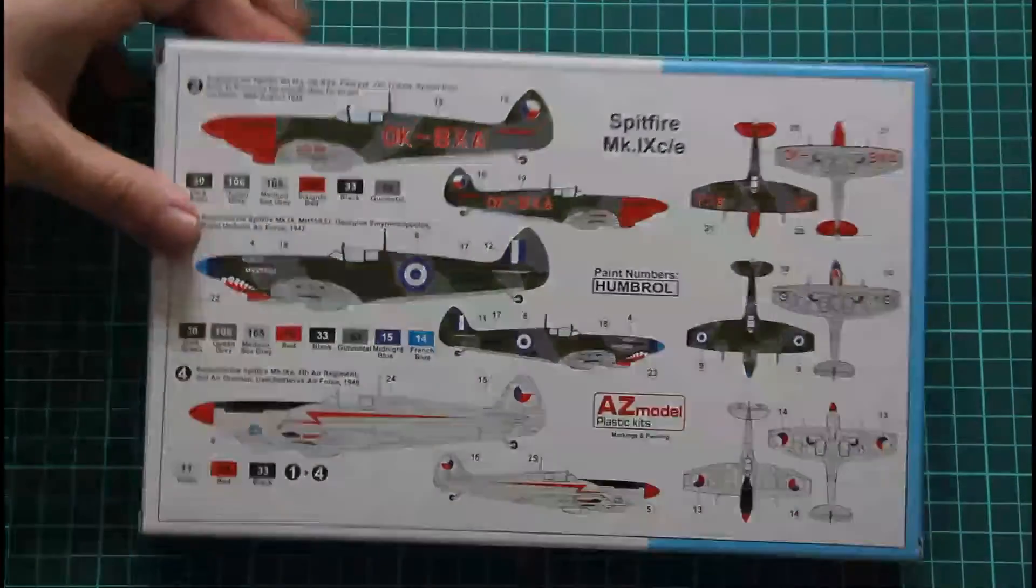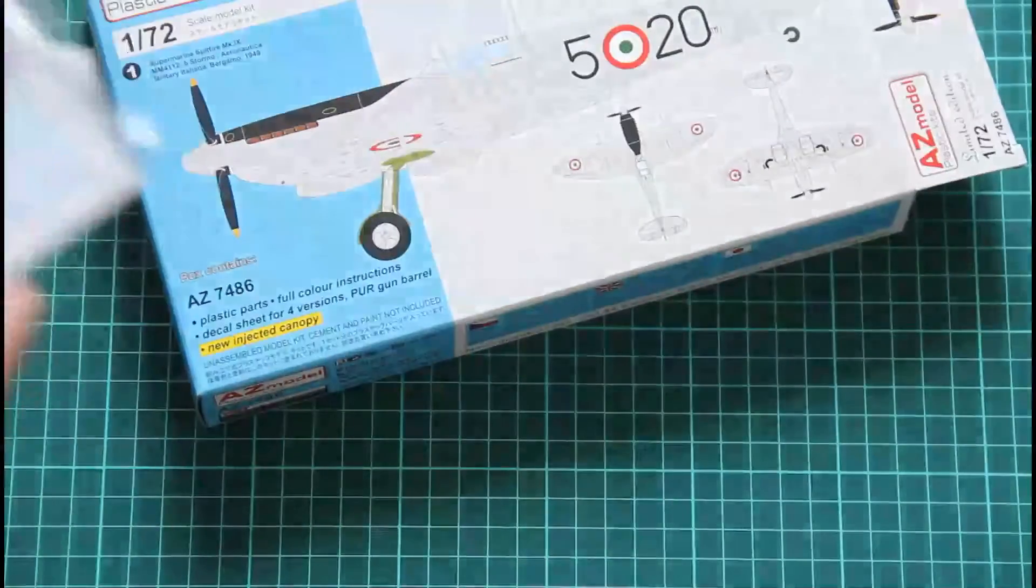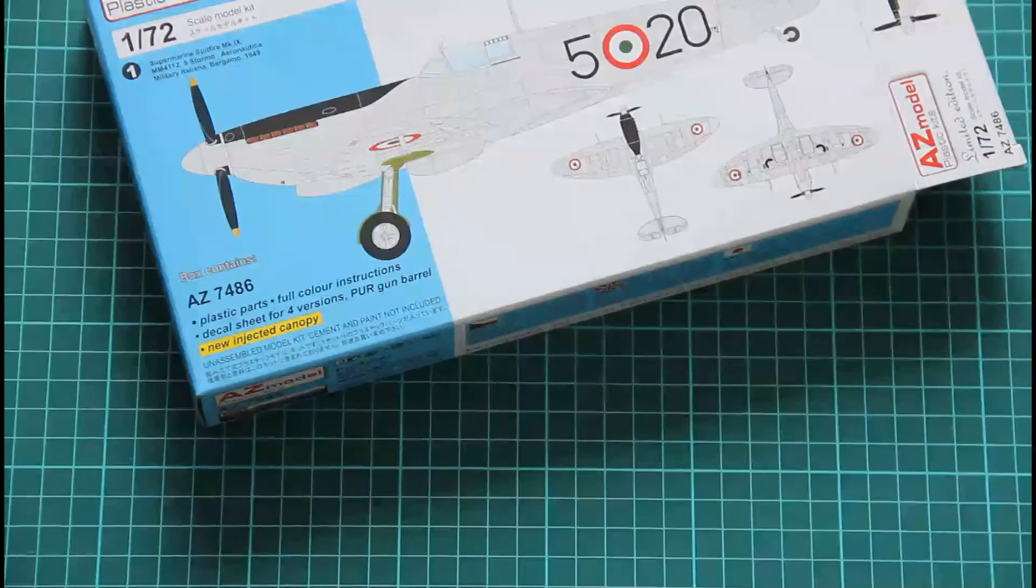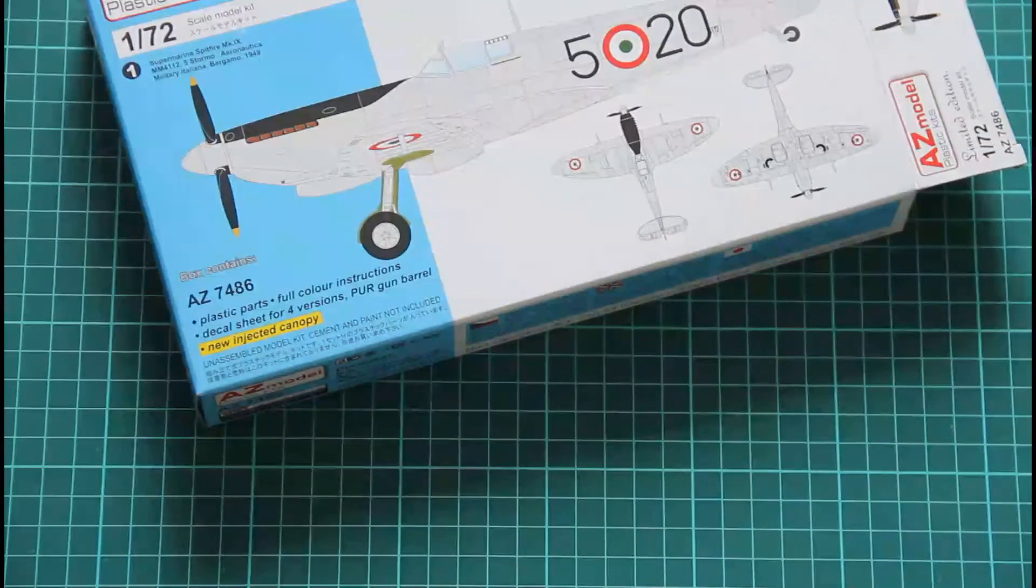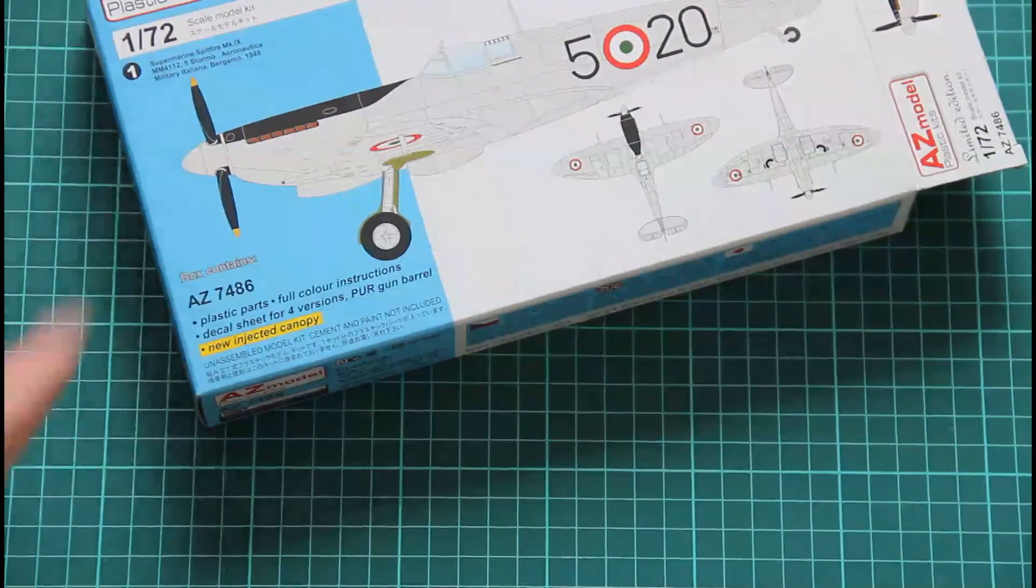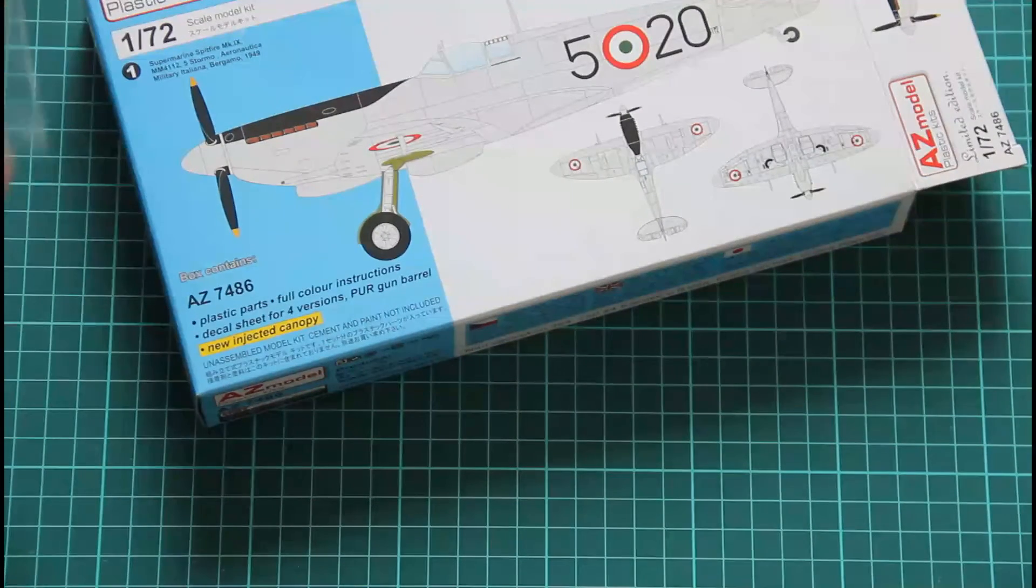So it's packed in this traditional Azat model box. It's side opening, so let's open it and check it. Inside we will find two brown sprues, one transparent part, and resin parts as well.